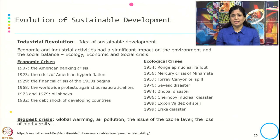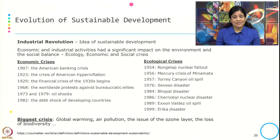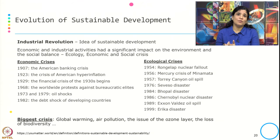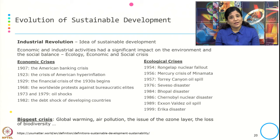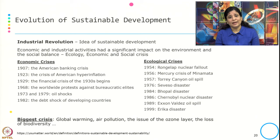There are many crises — a few of them are economic crises and ecological crises. The biggest crises that came after the industrial revolution over the years, which we are encountering right now, include global warming, air pollution, ozone layer depletion, loss of biodiversity, glacier melting, and so on.